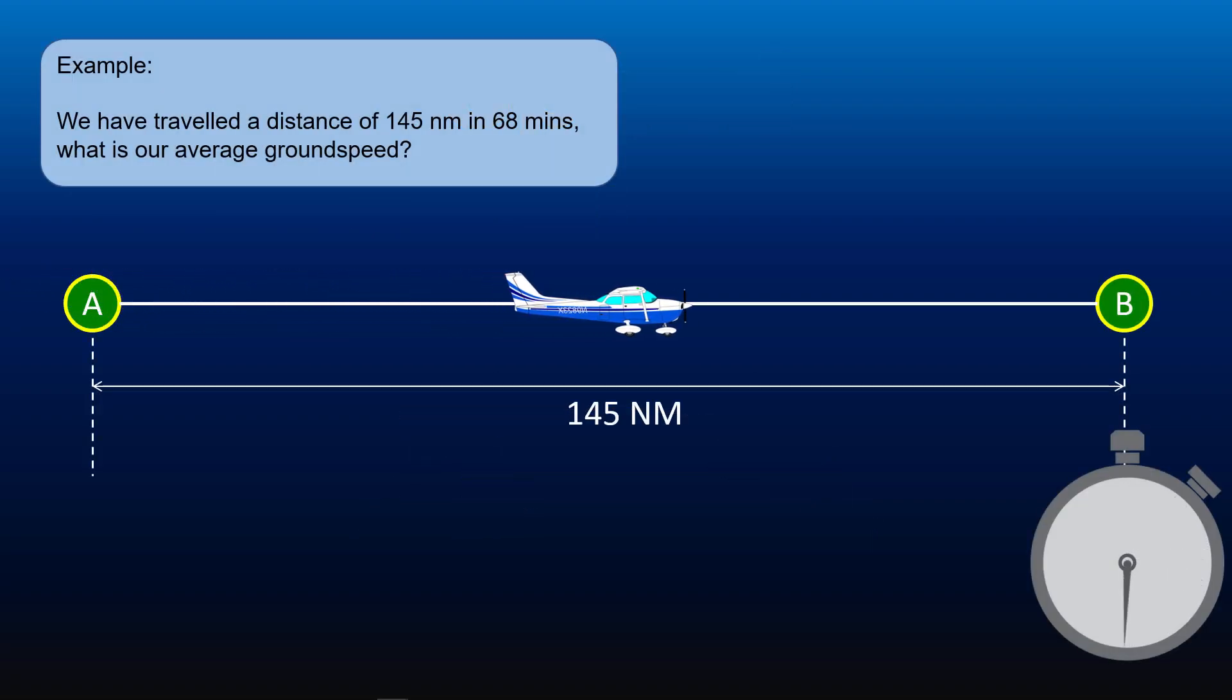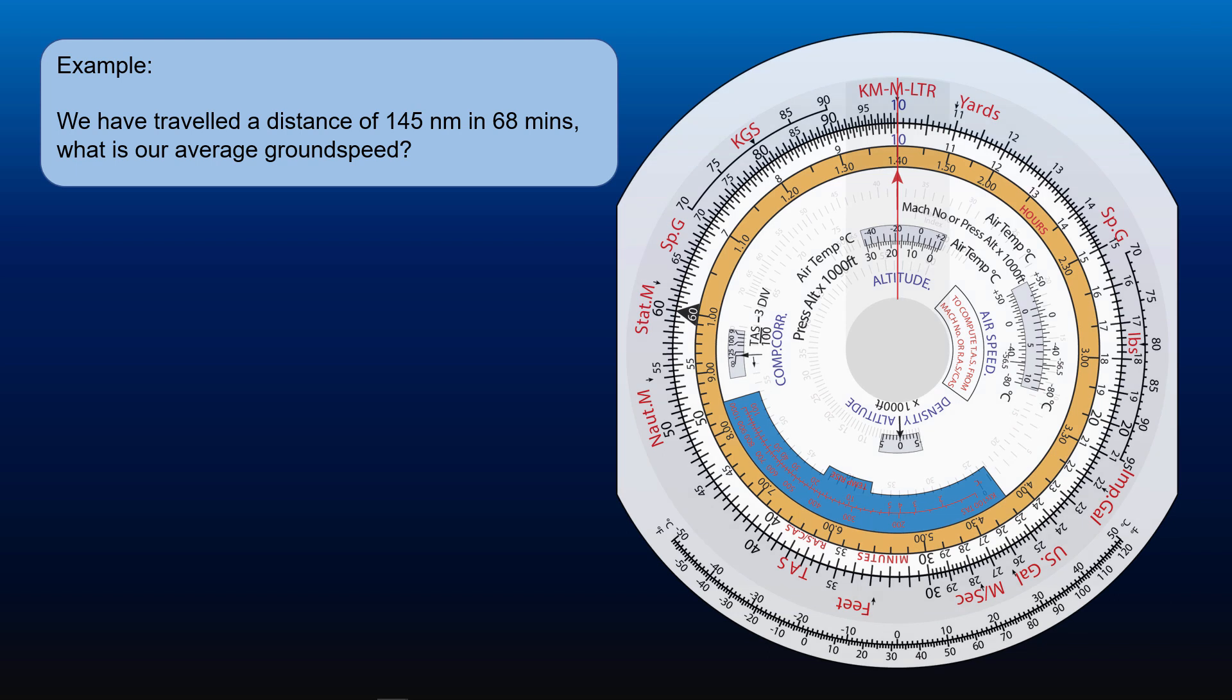We have traveled a distance of 145 nautical miles in 68 minutes. What is our average ground speed? For approximation, we can get a ballpark idea of the answer by saying that as our elapsed time is just more than an hour, our speed will be just less than 145 knots.